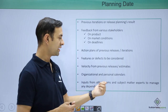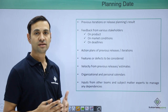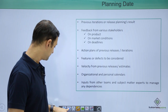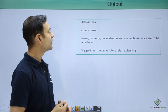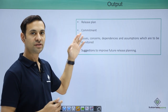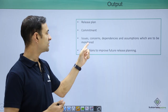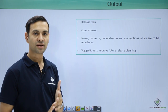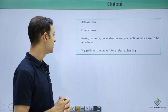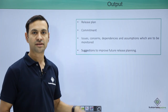Input from other teams and subject matter experts is required to manage any dependency, so that we can identify risks ahead of time. The final outcome would be a release plan with a set of commitments, issues, concerns, dependencies, and assumptions which are to be monitored properly during release planning. The final outcome is the release plan itself, along with any suggestions to improve future release plans, which act as action items.